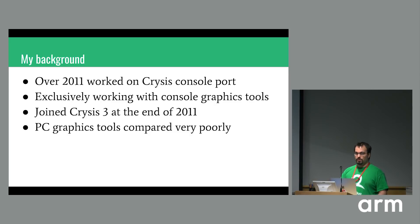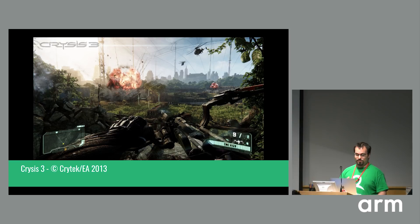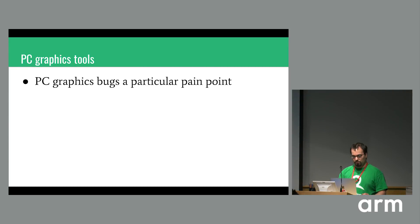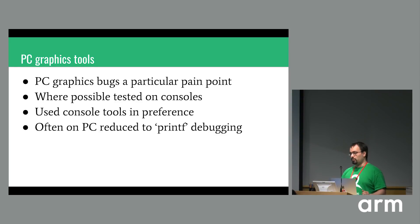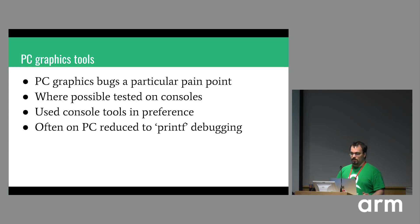When I shipped that project and joined Crysis 3 at the end of 2011, I was back in the PC world and the graphics tools compared badly — it wasn't a pleasant transition. Crysis 3 is a complex graphical game with a lot to the renderer, so that means a lot of rendering bugs. PC graphics tools were a particular pain point. My workflow was: whenever I got a bug, I'd first try to reproduce it on consoles. If it was a PC-exclusive bug, I was reduced to printf debugging — editing a shader to output a particular color and diagnosing what's going wrong based on red or green appearing on screen. Not a good workflow.